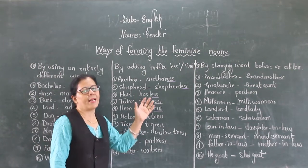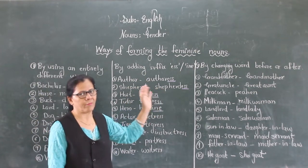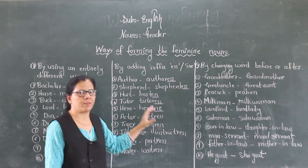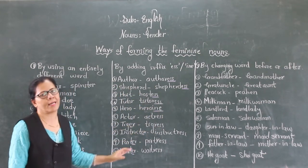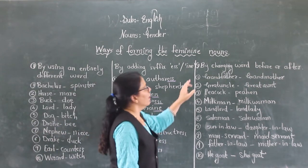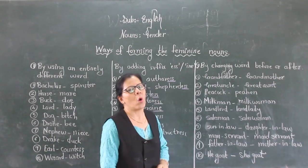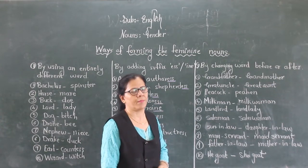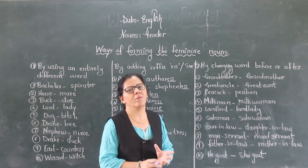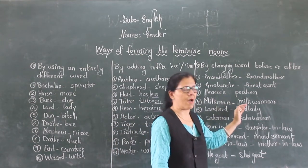So by adding -ess, or dropping the final vowel and adding -ess, we can form feminine nouns. That was the second way. Now let us take the third way: by changing the word before or after. So we change a part of a compound word to form the feminine noun.